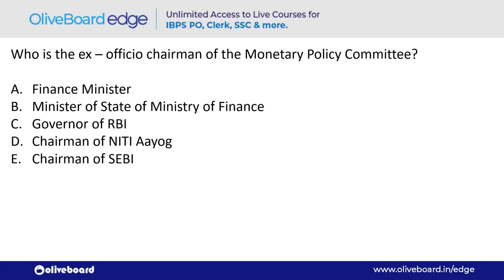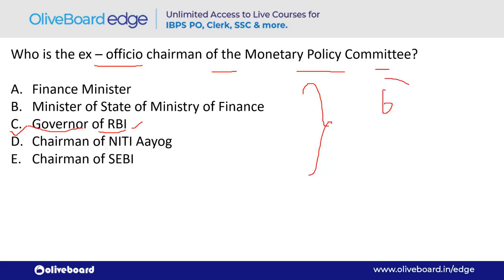Who is the ex-officio chairman of the MPC (Monetary Policy Committee)? The answer is the Governor of RBI — option C. MPC has 6 total members and was set up in 2016.